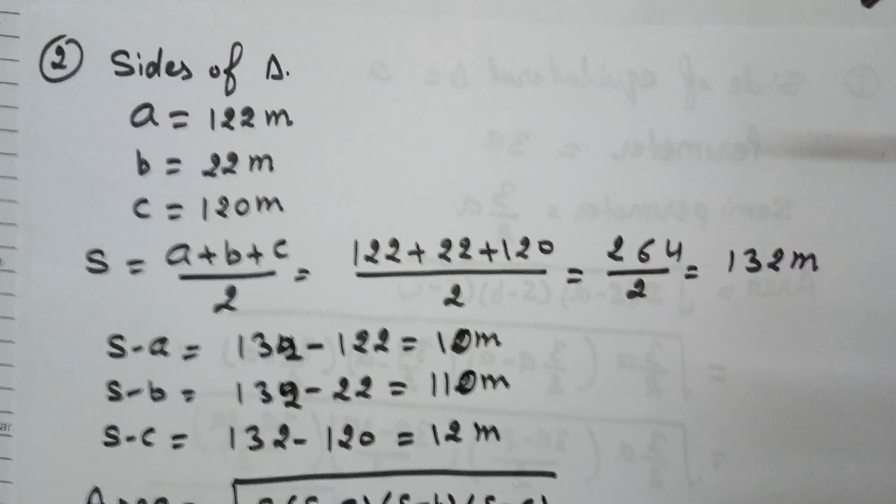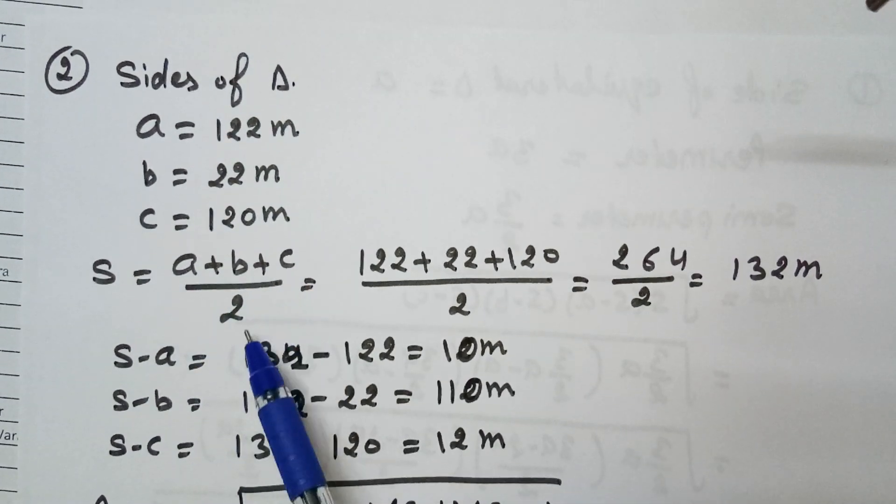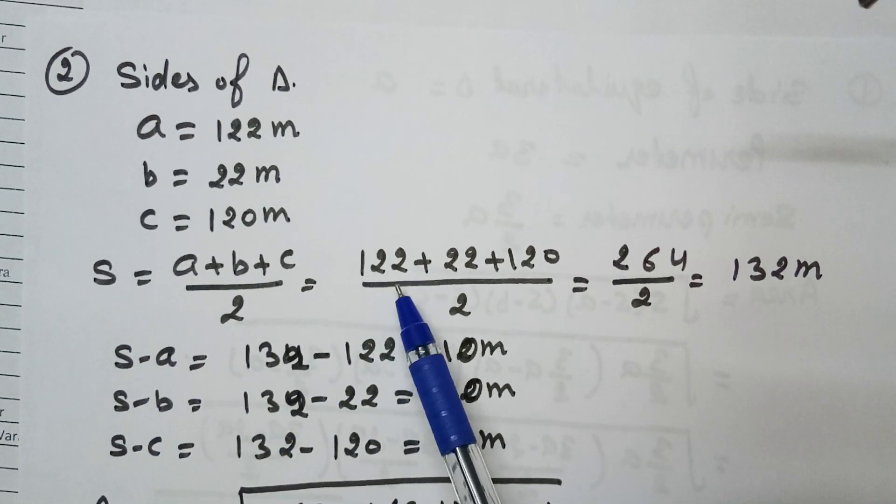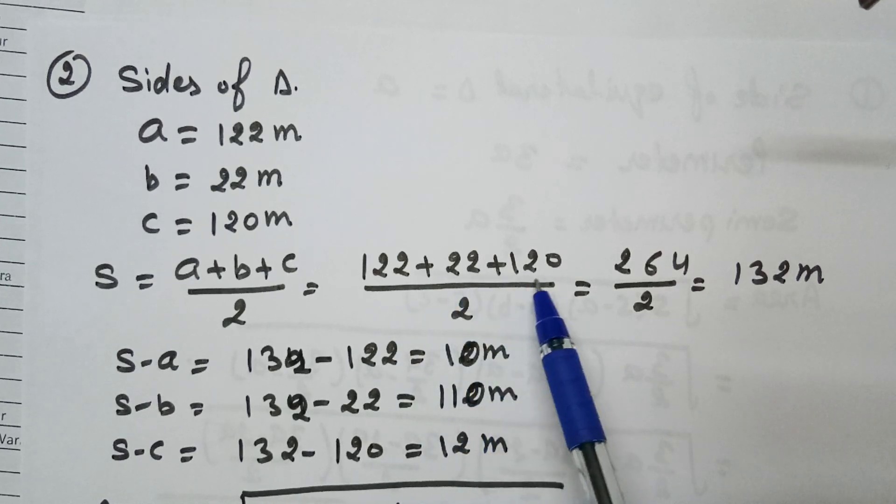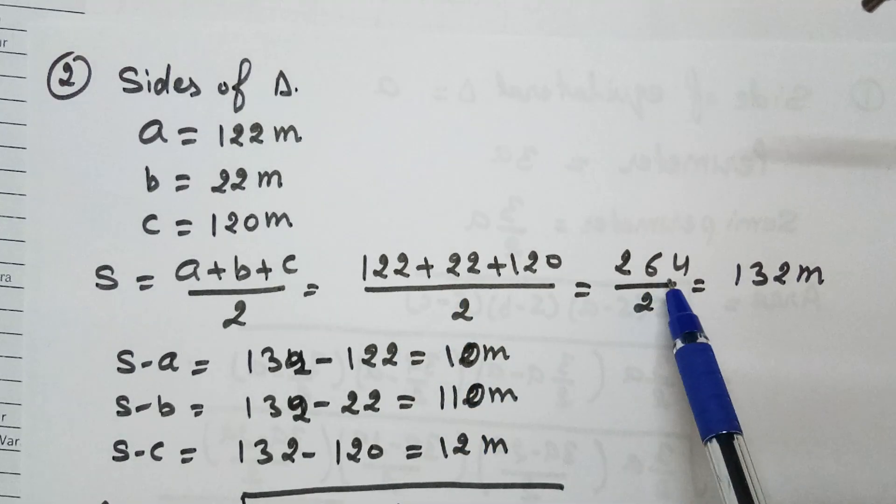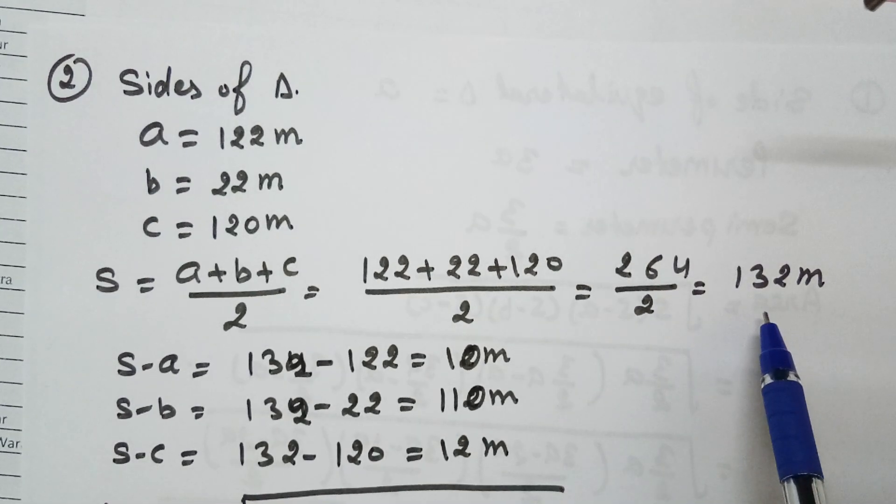First, the semi-perimeter S equals (a + b + c) / 2. So S = (122 + 22 + 120) / 2 = 264 / 2 = 132 meters. The semi-perimeter is 132 meters.